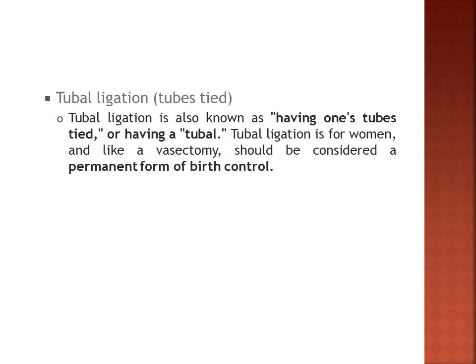Next we have tubal ligation — here in the Philippines, commonly called 'tubes tied.' Tubal ligation is for women and, like a vasectomy, should be considered a permanent form of birth control. In this procedure, the fallopian tubes are tied to prevent the release of eggs from the ovaries. This is an irreversible and permanent form of birth control for women.